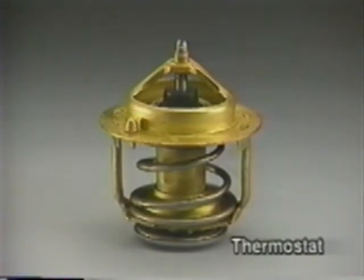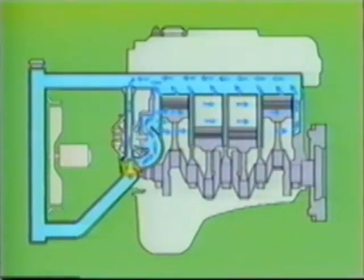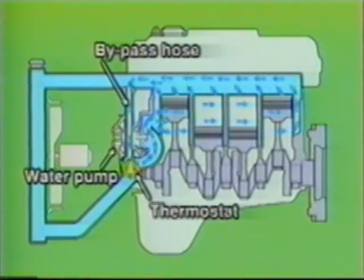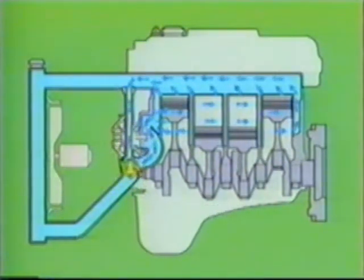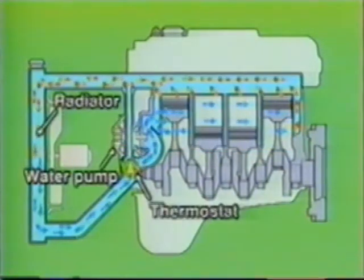There are two coolant flow circuits inter-switched by the thermostat. When the coolant temperature is low, the thermostat closes, shutting off coolant flow to the radiator so as to warm the engine quickly. The coolant from the water pump then flows through the cylinder block and cylinder head, returning to the water pump via the bypass. When the coolant temperature becomes high, the thermostat opens, allowing the coolant to flow to the radiator, thus maintaining an appropriate engine temperature.